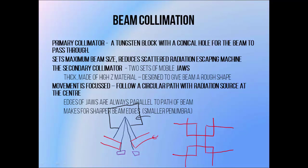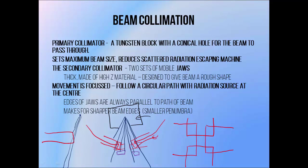The jaw movement is said to be focused, meaning they move in a circular path such that their edge is always parallel to the path of the beam. This helps to keep the beam edge nice and sharp, since if the jaws followed a flat non-focused path their edges wouldn't be parallel to the beam's direction of travel, and some photons would travel further through the jaw than others. This means that the face of the jaw would not block the beam off cleanly, and photons that travel only a short distance through the jaw would contribute dose to the edge of the field, resulting in a wider beam edge. We often call this region the penumbra, so a focused jaw allows for a narrow beam penumbra.